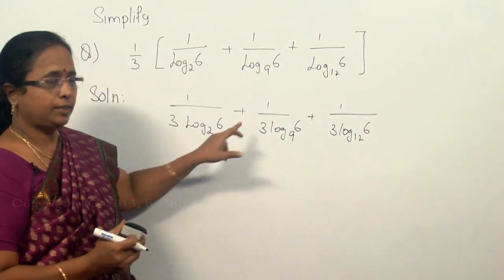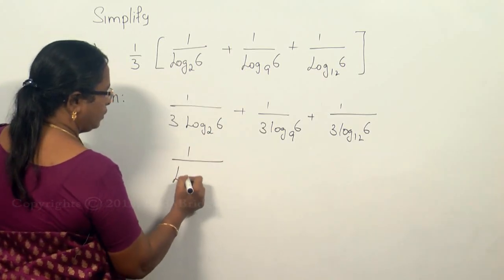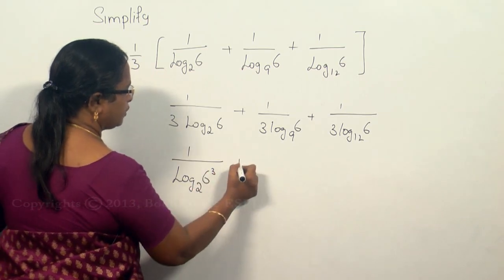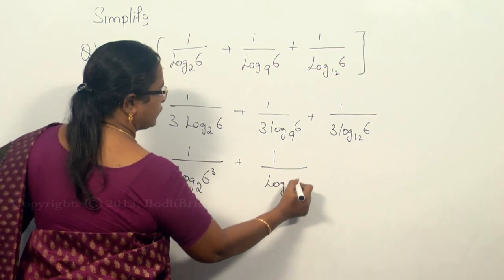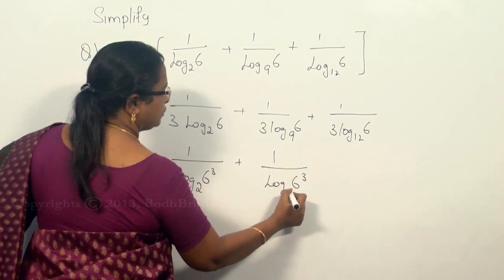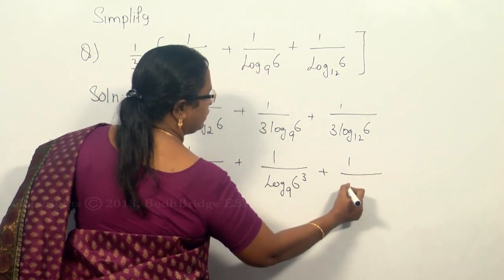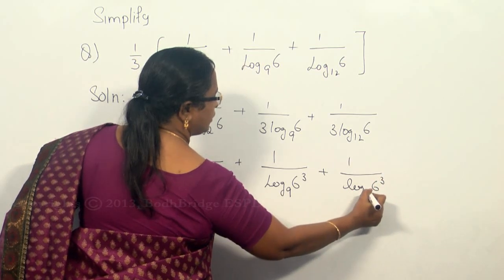Now this 3 can be taken in as 1 divided by log 6 cube to the base 2 plus 1 divided by log 6 cube to the base 9 plus 1 divided by log 6 cube to the base 12.